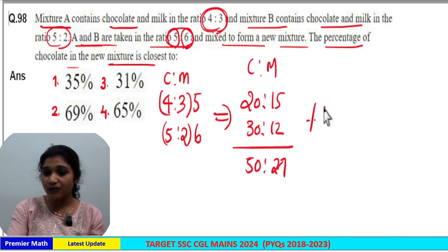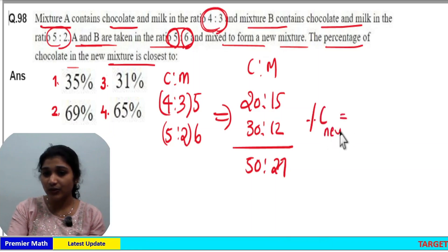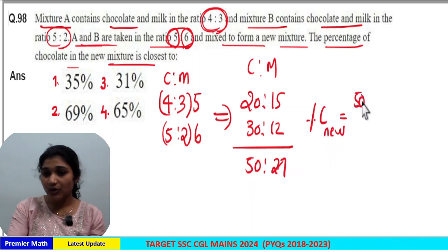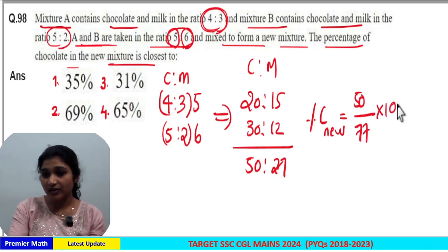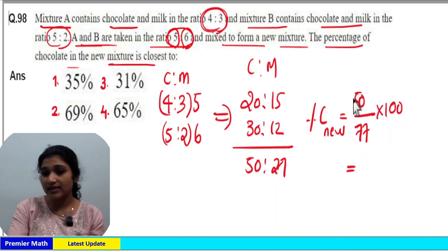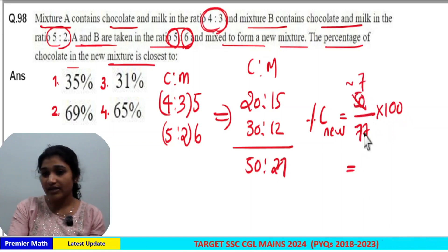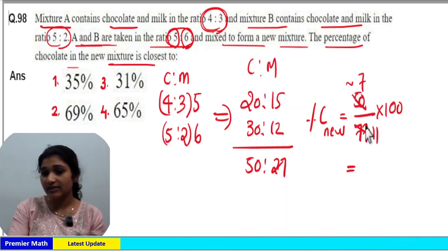The percentage of chocolate in the new mixture is equal to 50 — the chocolate part — out of the total 77 mixture parts, multiplied by 100. If we consider 49, 7 goes 7 times into 49, and 7 goes 11 times into 77.